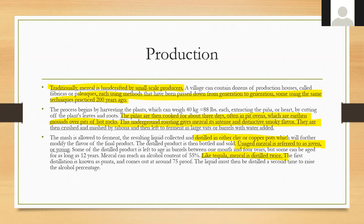Mezcal is typically handcrafted by smaller-scale producers — a village can contain dozens of production houses called fabricas or palenques, each using methods passed down for hundreds of years. It begins with harvesting the plants, which can weigh up to 88 pounds each, and cutting off the leaves and roots just like tequila production. They're then cooked for a few days in pit ovens — earthen mounds over pits of hot rocks. This underground roasting gives mezcal its intense and distinctive smoky flavor. The mash is then crushed by the tahona and left to ferment in large vats or barrels with a little added water, then distilled in either clay or copper pots.